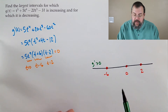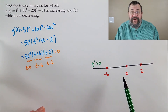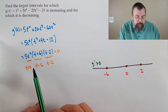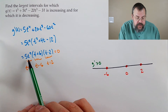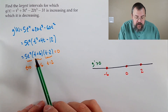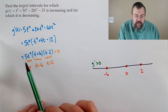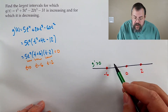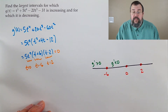Between negative 6 and 0, pick negative 1. The 5t squared piece is positive; negative 1 plus 6 is positive; negative 1 minus 2 is negative. Positive times positive times negative — the result is a negative value. So our derivative is negative on that interval.